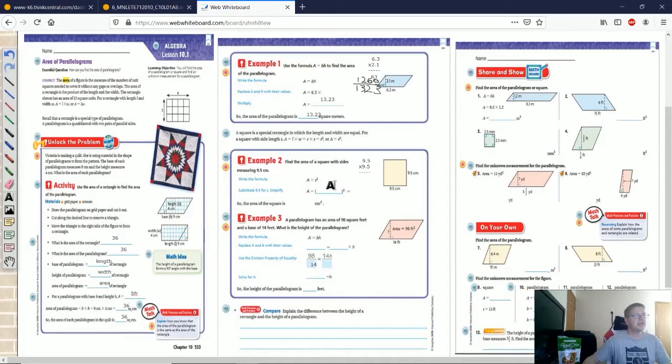I have two decimal points so that's going to give me an area of 13.23 square meters.